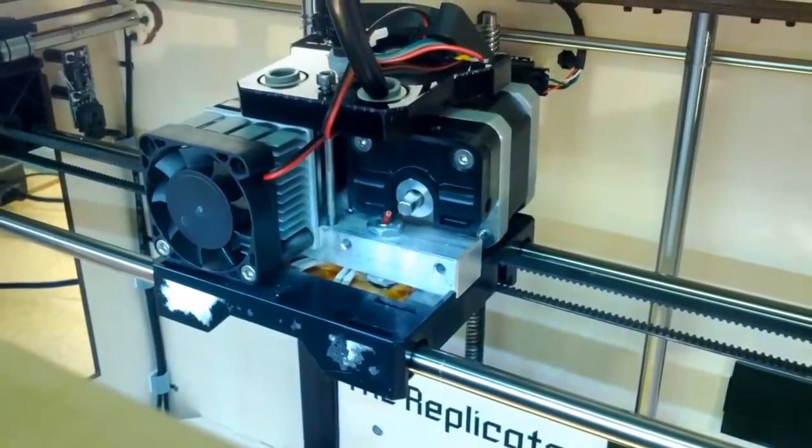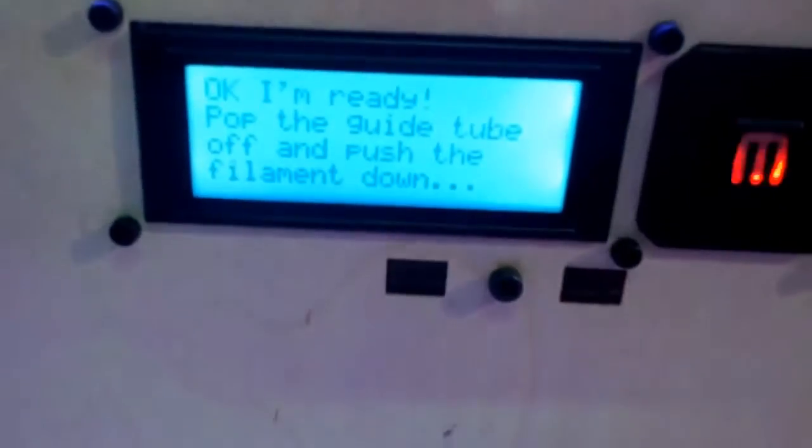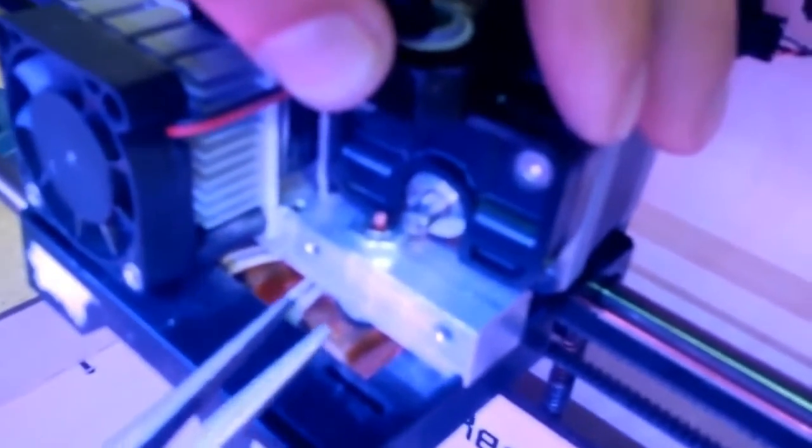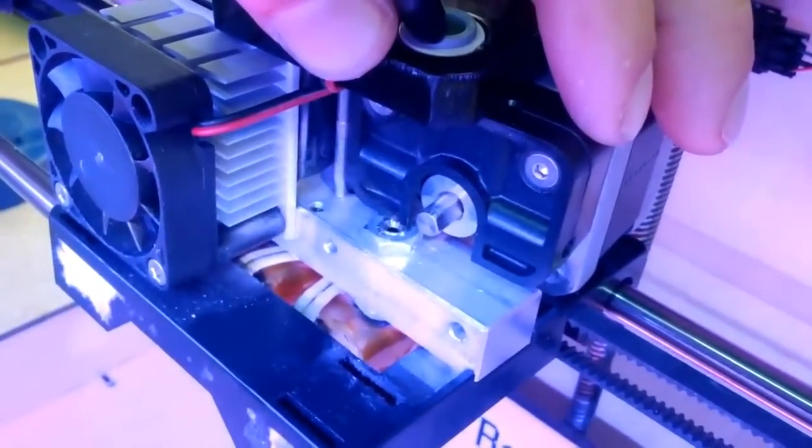I'm just running the load filament script again. So now my extruder is hot and it's going to be possible for me to pull this straight piece of filament out. I'm going to use a pair of needle nose pliers to grab it and tug it right out. No problem.